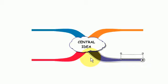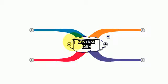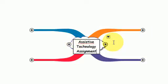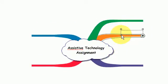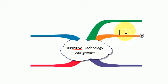Here we go. The central idea is going to be the title of the essay: Assistive Technology Assignment. Then you would input into each branch any thought or idea that you have in relation to that assignment.